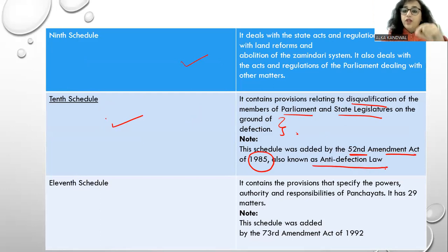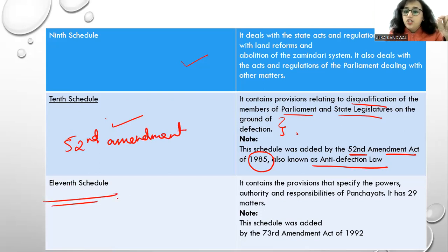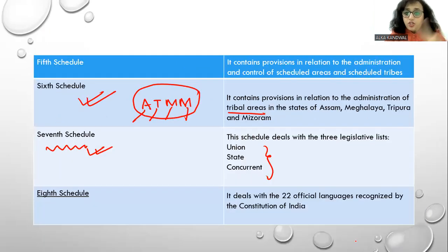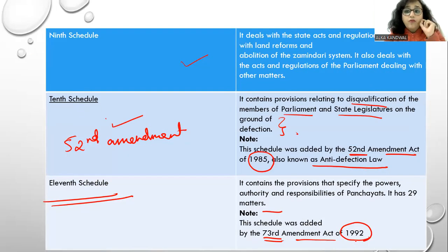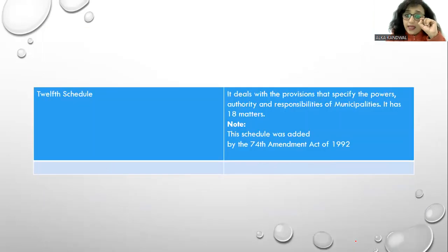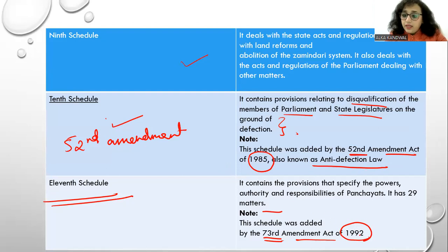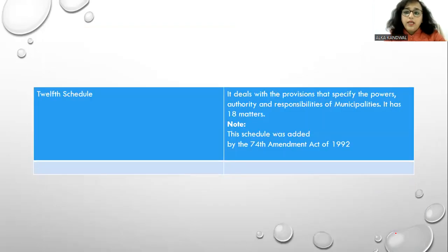The 10th Schedule is also known as the Anti-Defection Law. This question may ask which amendment — the 52nd Amendment. The 11th Schedule contains provisions specifying the powers, authorities, and responsibilities of Panchayats, with 29 matters, added by the 73rd Amendment Act of 1992. The 12th Schedule contains provisions specifying the powers, authorities, and responsibilities of Municipalities, with 18 matters, added by the 74th Amendment Act of 1992. Remember: 8th Schedule for languages, 6th Schedule for Assam, Meghalaya, Tripura, and Mizoram.